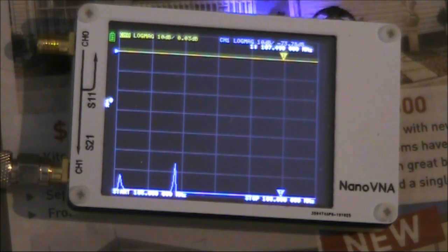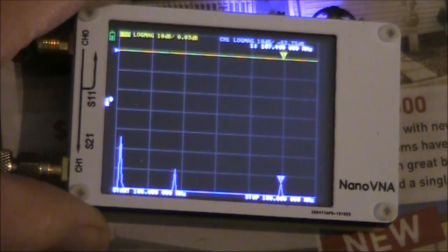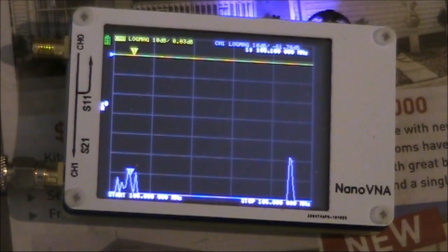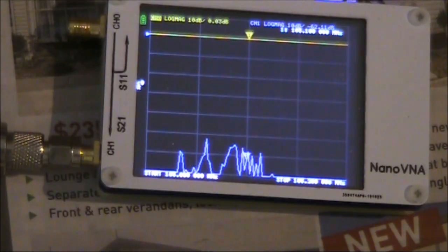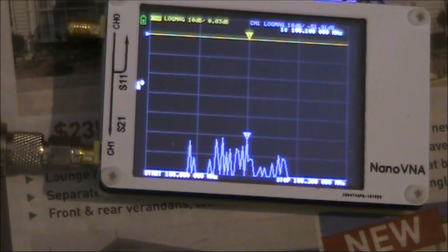I'll just narrow the tuning range a little bit more so that it's only covering one station. Well, it's actually covering two stations. I put in 105 to 106. We'll zoom in a bit more. This is 105 to 105.2.